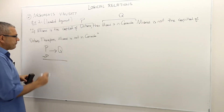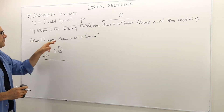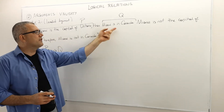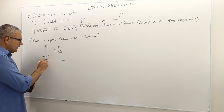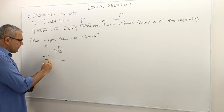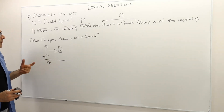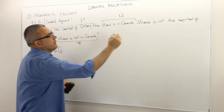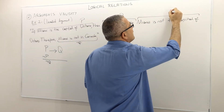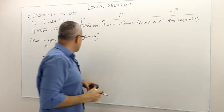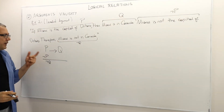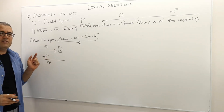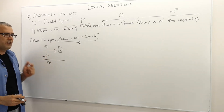Therefore, here is the conclusion: 'Miami is not in Canada.' This is not a new atomic sentence — it's the negation of Q, so not Q. That means: the first premise is P implies Q, the second premise is not P, and the conclusion is not Q.